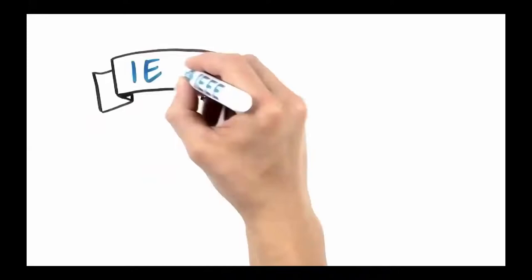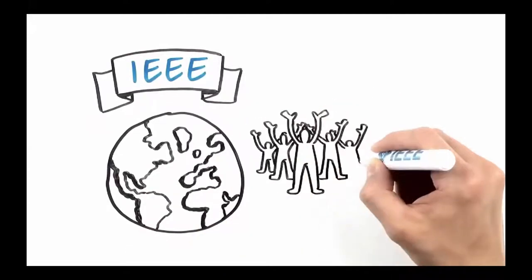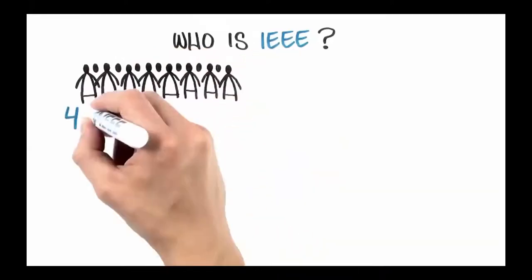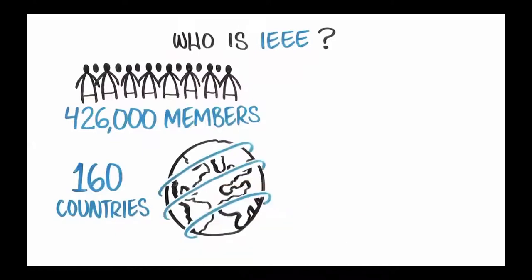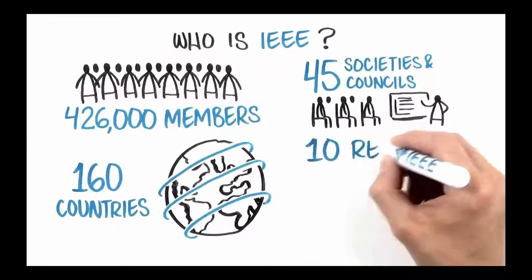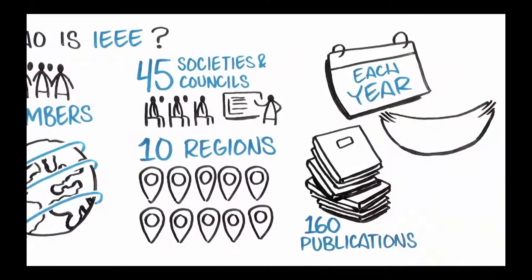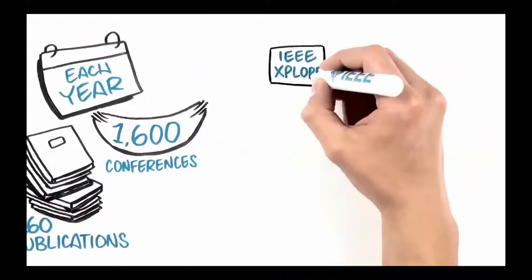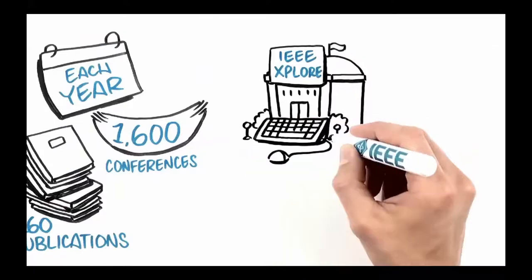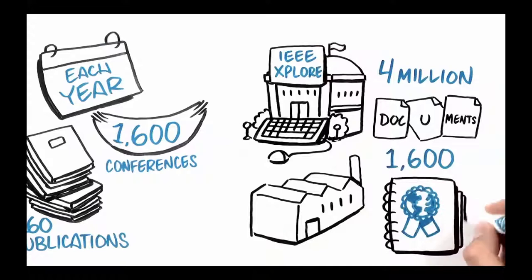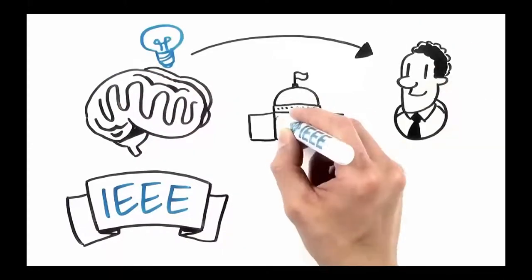Hello, we're IEEE, the world's largest professional organization striving to advance technology for humanity. And today we want to tell you about our strategic plan for the future. We're a global community of more than 426,000 members in over 160 countries around the globe. We have 45 societies and technical councils and 10 geographic regions supporting our worldwide technology community. Each year we publish over 160 publications and hold more than 1,600 conferences. Our digital library, IEEE Xplore, houses nearly 4 million scholarly scientific documents. Working closely with industry, we have developed more than 1,600 internationally recognized standards and projects. In total, IEEE is one of the largest knowledge generators for technology professionals across governments, academia, and businesses.